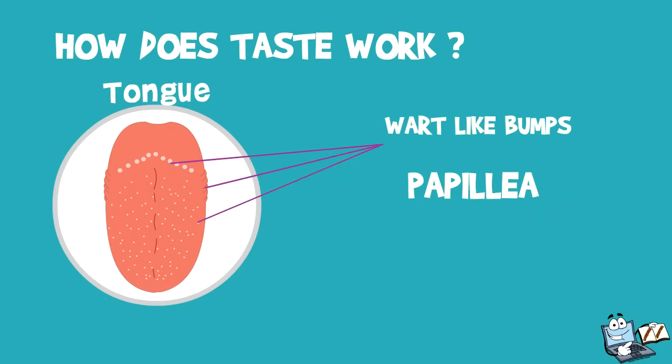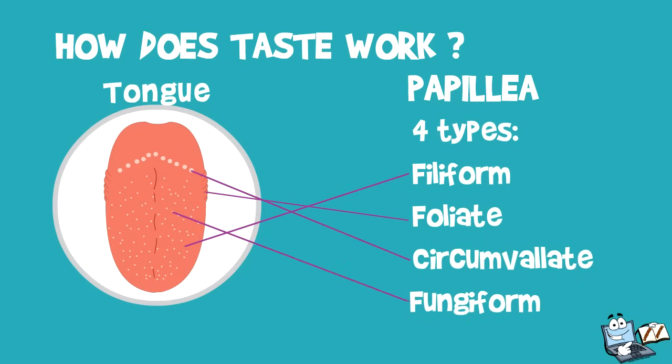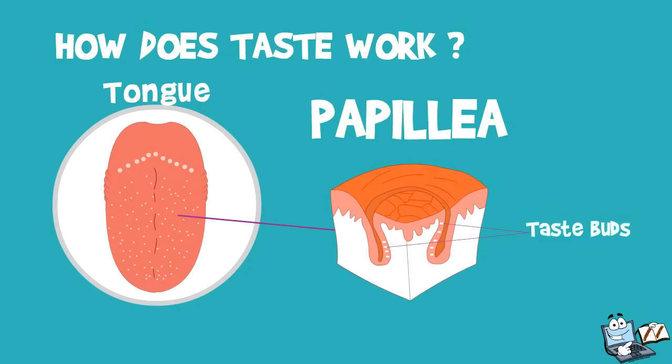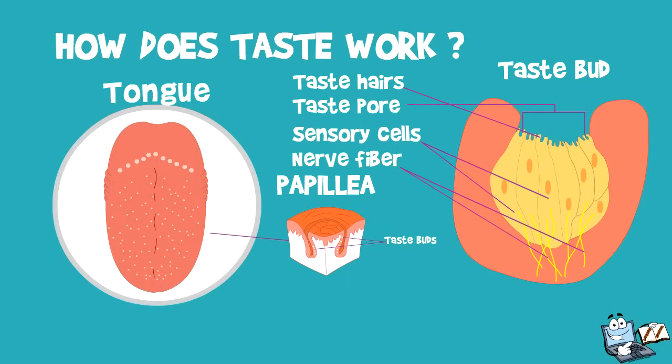On the surface of the tongue, there is papillae that look like bumps. These are the four types: filiform, foliate, circumvallate, and fungiform. The taste buds are located on the walls of papillae. They have the taste hairs, taste pores, sensory cells, and the nerve fibers.